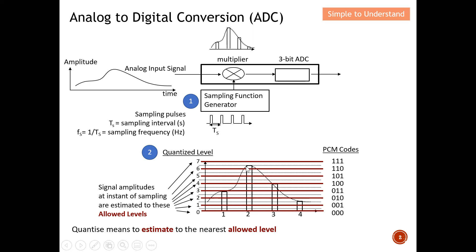Looking at this diagram, focusing on the top part: the analog signal falls right in between two levels, so I can't indicate it exactly at that point. I can only represent it at either the upper or lower level. This is what quantization means — I estimate the signal to the nearest allowed level. It is practically impossible to express the analog signal exactly, so I either bring it up or bring it down to the nearest level.